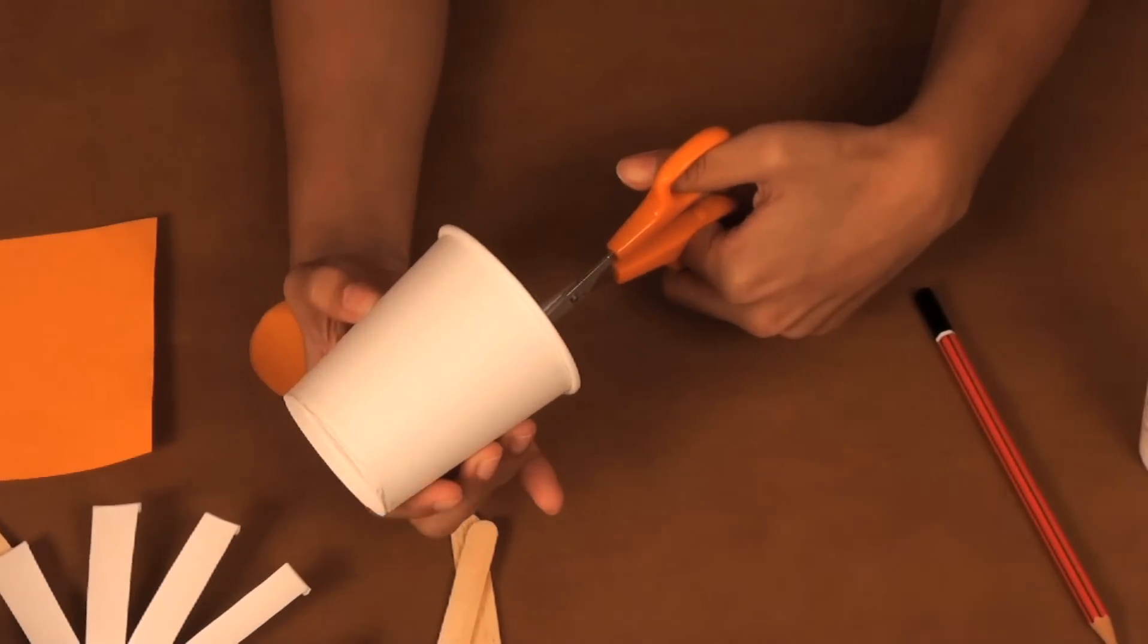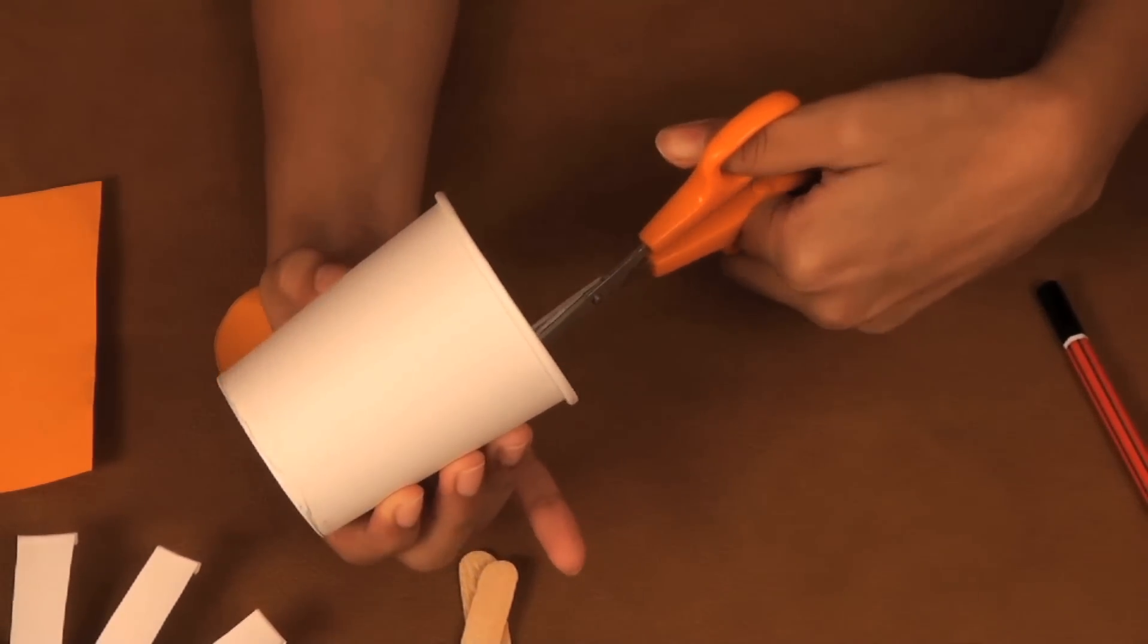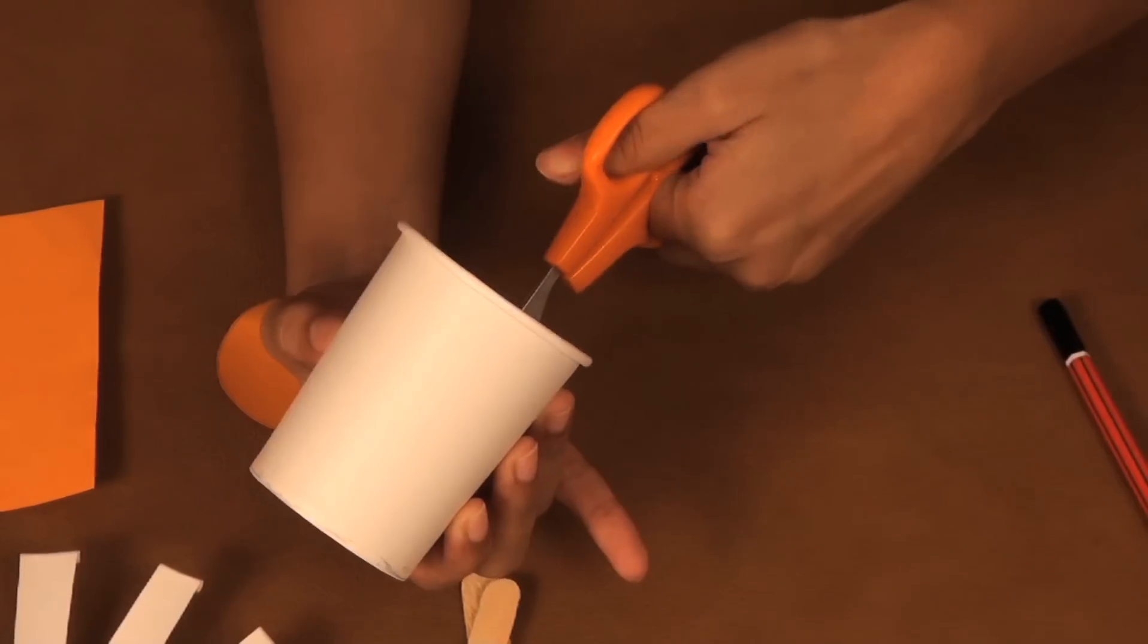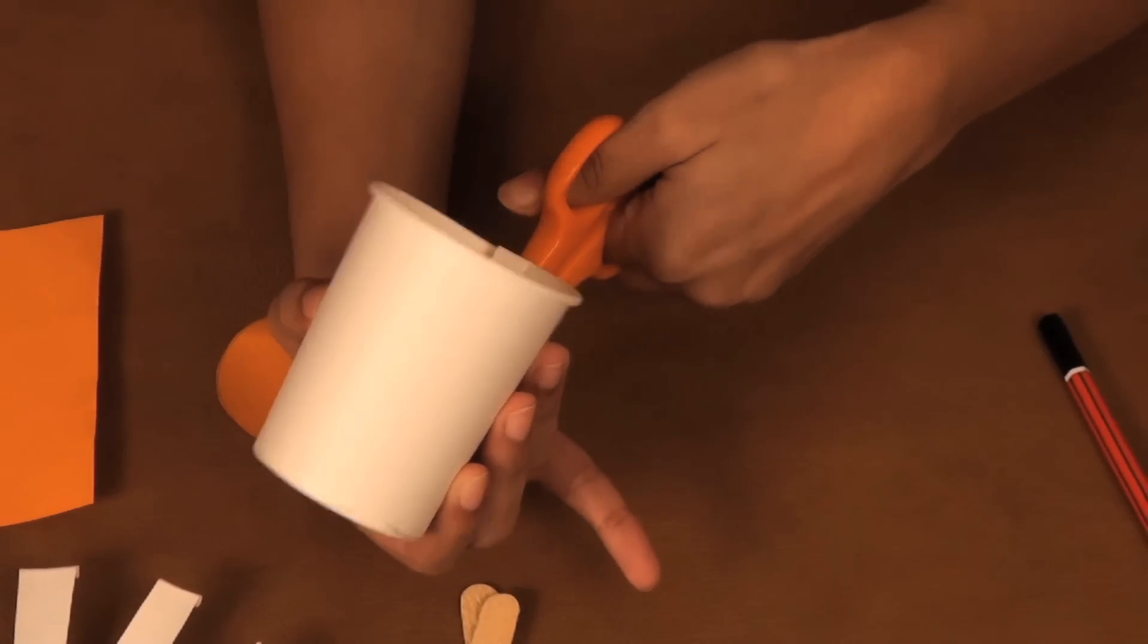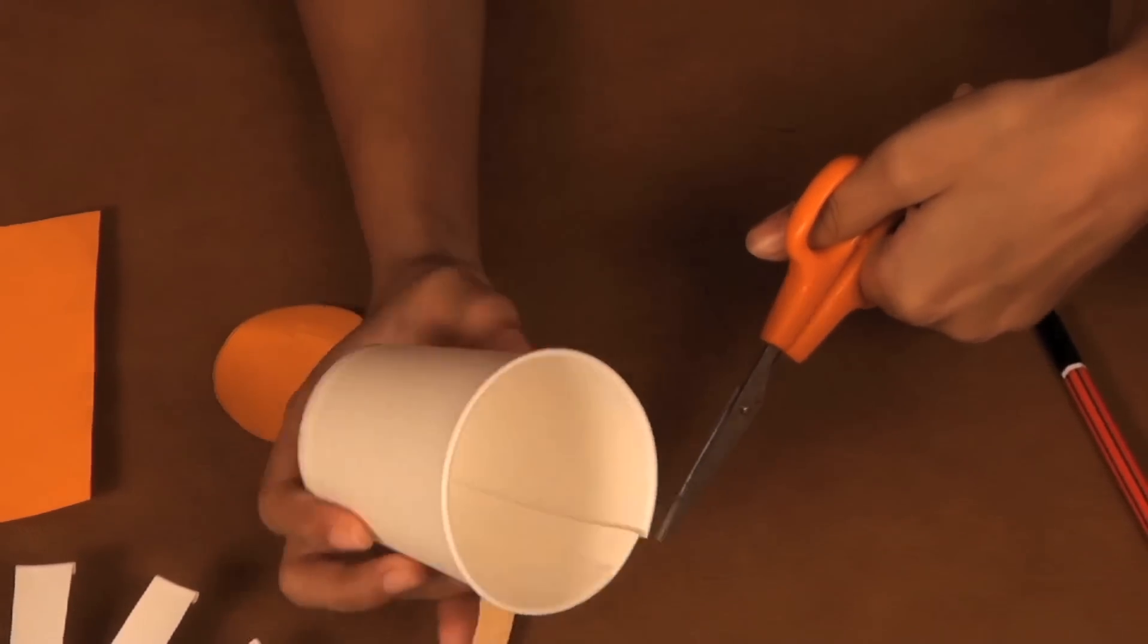Now with the scissors, cut strips into the paper cup. Make sure you leave about 1 cm at the base or else the petals will break. There, the cup should look like this.